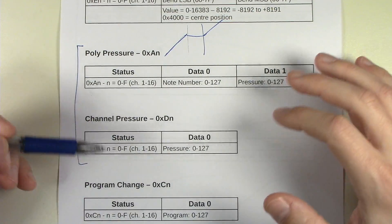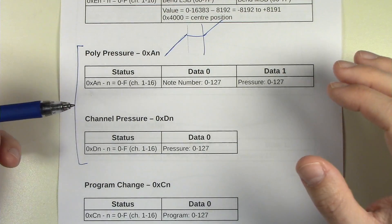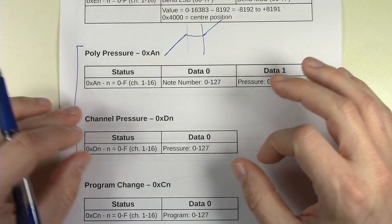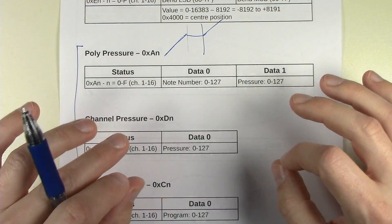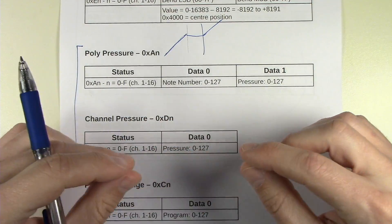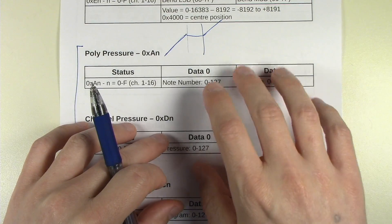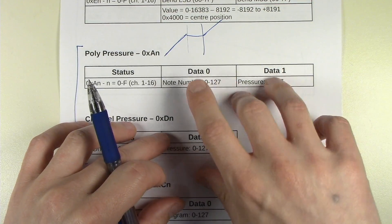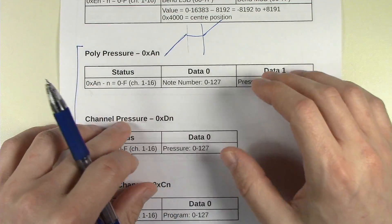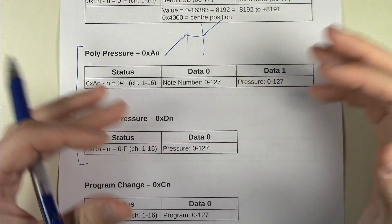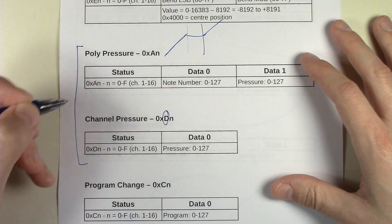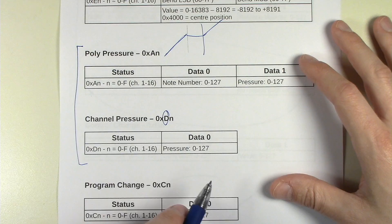And then there's channel pressure, which is kind of more global, where basically instead of each key having some sort of a sensor, instead they have just a sensor along the whole keyboard. And usually that's implemented with a pressure-sensitive resistive strip that's mounted underneath the keyboard. So no matter what key you press, they all kind of contribute to pressing down and changing the resistance of this strip. So it doesn't really matter which key you lean on. All of them will send the same message. And that only has two data bytes, where it's just D for channel pressure, plus a pressure value from 0 to 127.